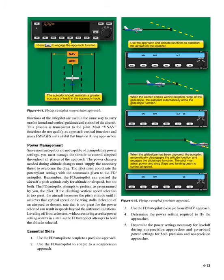Essential Skills: 1. Use the FD/autopilot to couple to a precision approach. 2. Use the FD/autopilot to couple to a non-precision approach. 3. Use the FD/autopilot to couple to an RNAV approach. 4. Determine the power setting required to fly the approaches. 5. Determine the power settings necessary for level off during non-precision approaches and go-around power settings for both precision and non-precision approaches. 6. Determine the speeds available for the minimum recommended powerplant settings, and assess whether an ATC clearance can be accepted for climbs, altitudes, and descents.